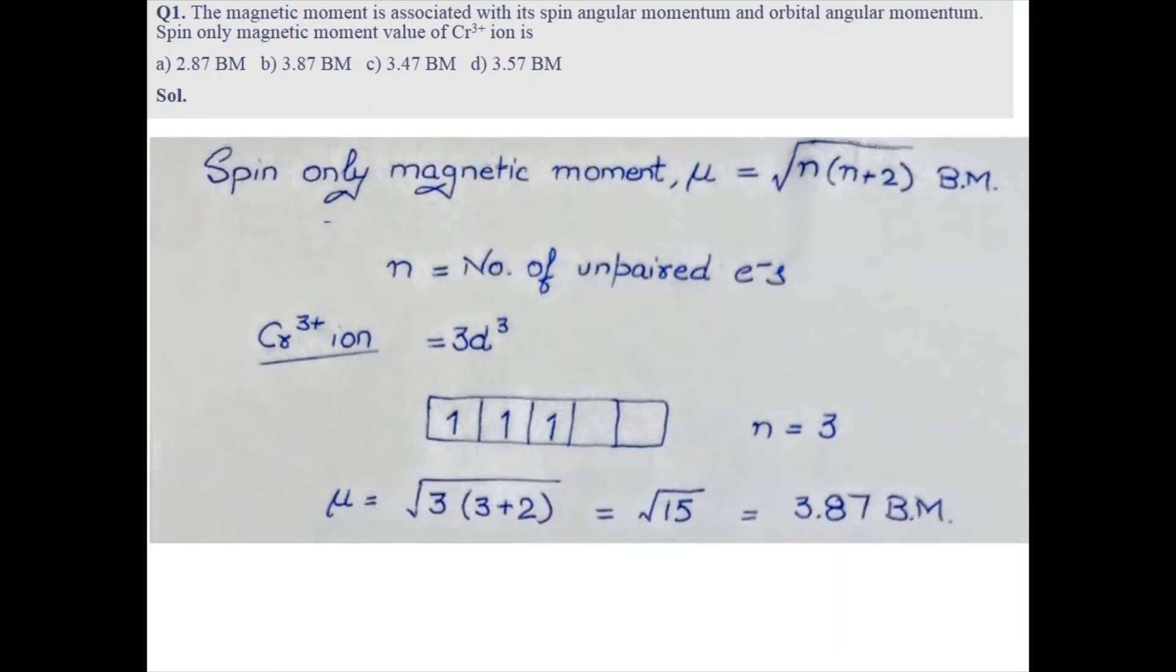number of unpaired electrons. So as far as chromium 3+ ion is concerned, it is a d3 system. There are three electrons in chromium 3+ ion, so here we show the 3d orbital where all three electrons are singly occupied, and the value of n here is 3. Now put the value of n in this...